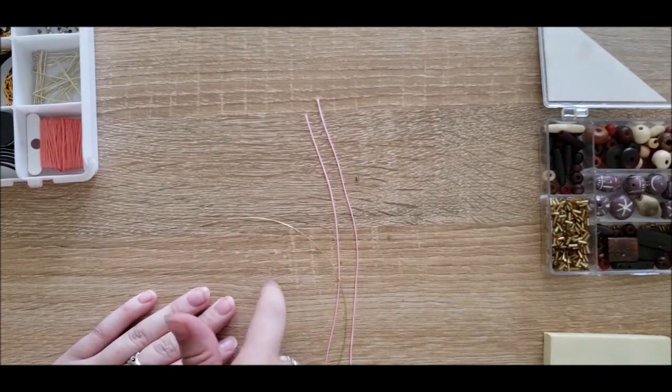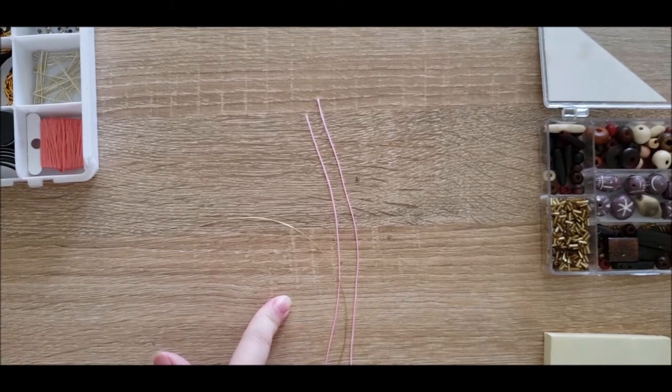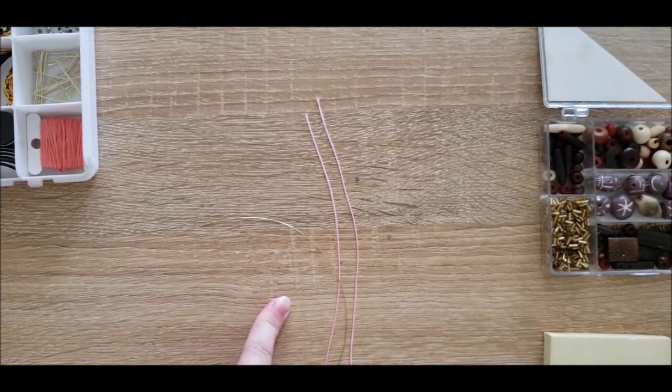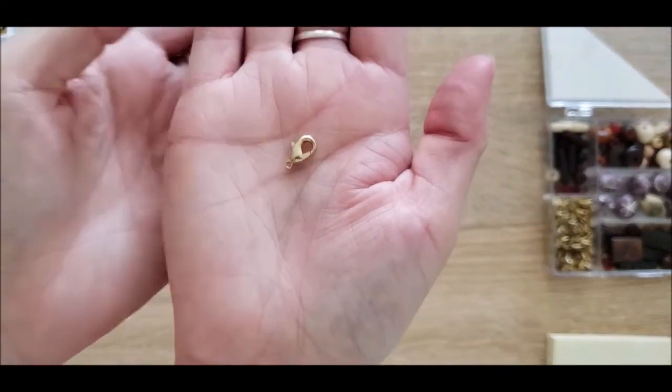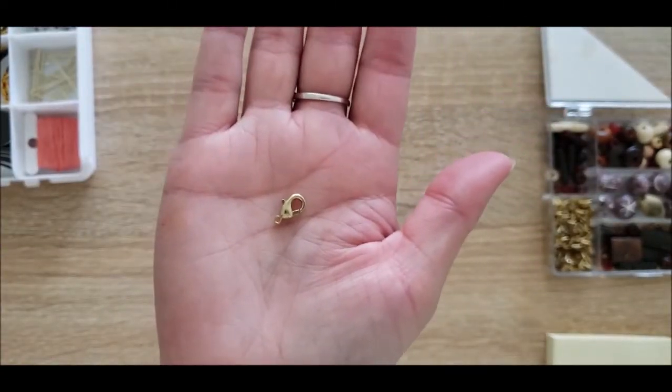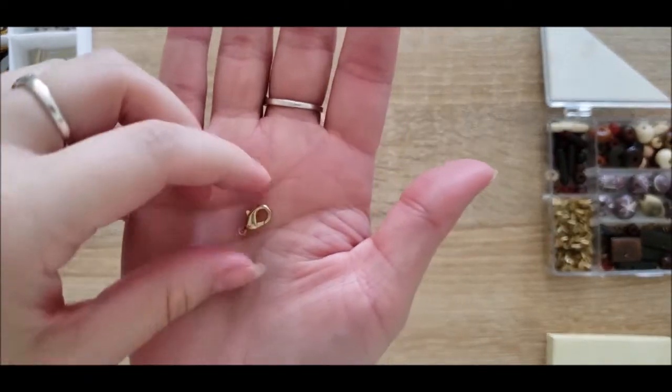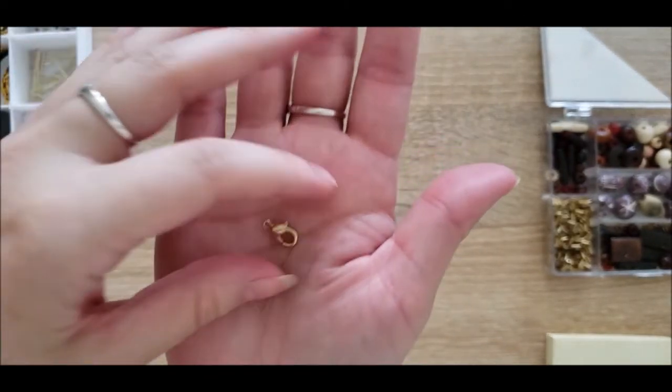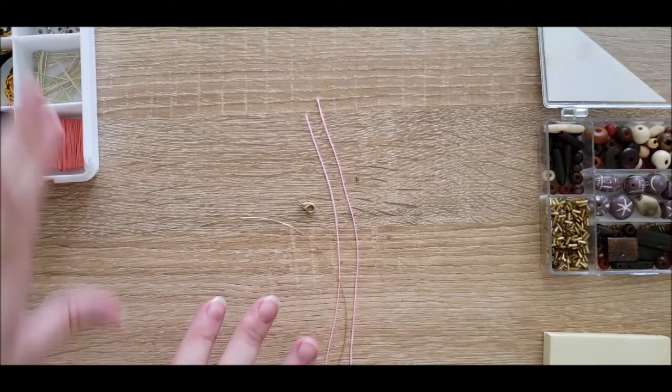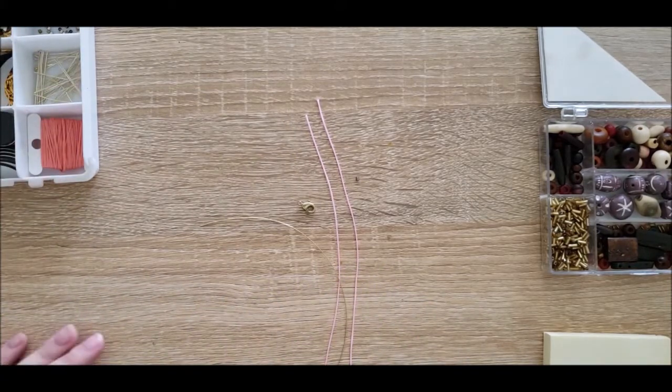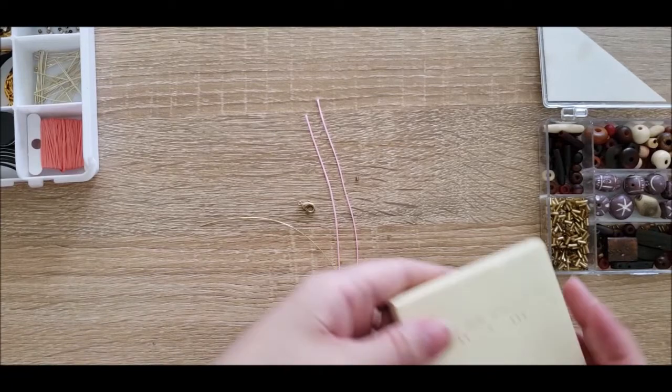You're going to need jump rings of course, and I am going to go with a lobster clasp closure, one of these just to make it easy to attach. I have my jump rings still in here and I'm not going to try to pick them out.